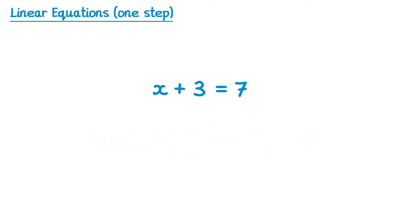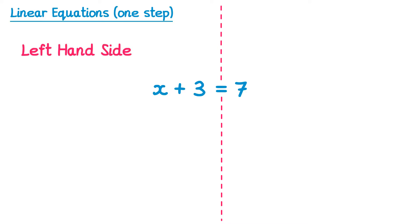To do this we're going to imagine there's a line down the centre of the equation going right through the equal sign. This splits the equation into two sides — we have the left hand side and the right hand side. The important rule to remember is that whatever you do to one side you must also do to the other side.